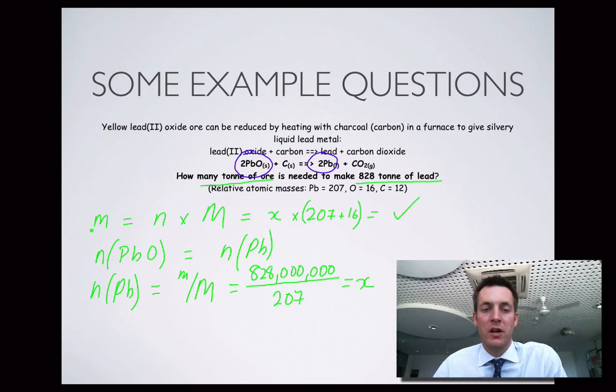So once again, I've started off with a formula for the thing I'm asked. How many tons of ore? That's a mass equals number of moles times molar mass. I've said to myself, I know the molar mass because it's in the periodic table. Or here, I'm told it in the question even. I just need to find the number of moles of lead oxide.